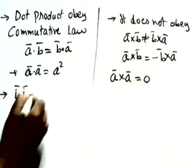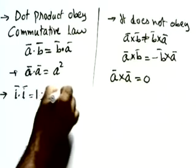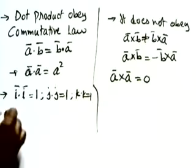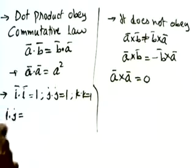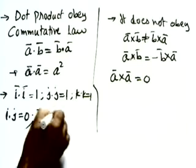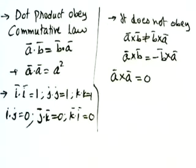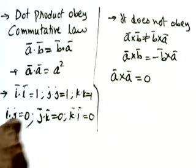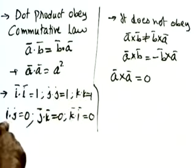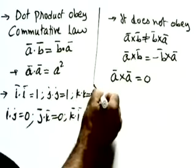For unit vectors: i·i = 1, j·j = 1, k·k = 1. But i·j = 0, j·k = 0, k·i = 0, because the angle between i, j, k is 90° and cos90° = 0. Similarly for cross product: i×i = 0, j×j = 0, k×k = 0 because the angle is zero so sin0° = 0.